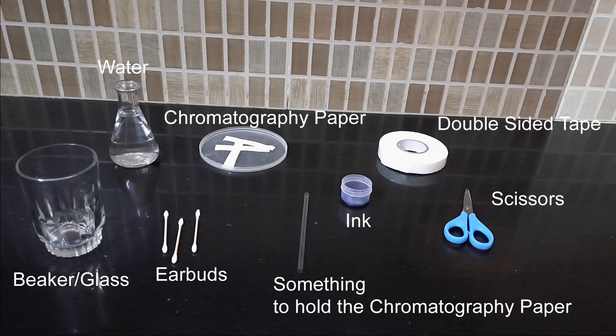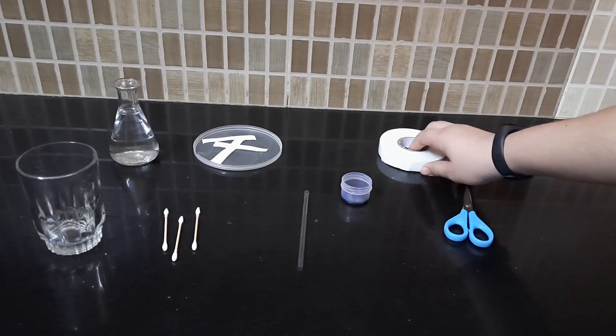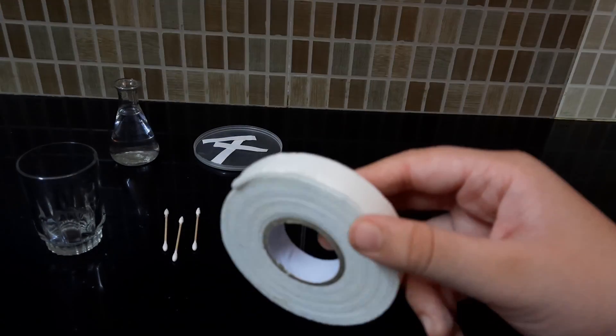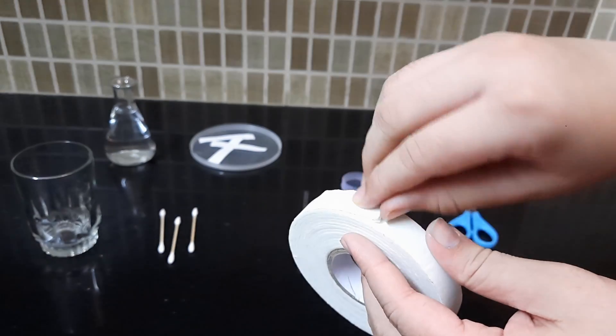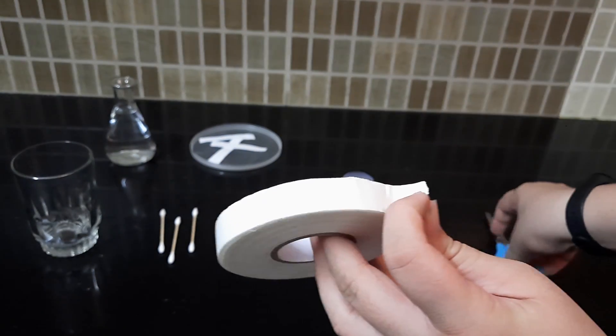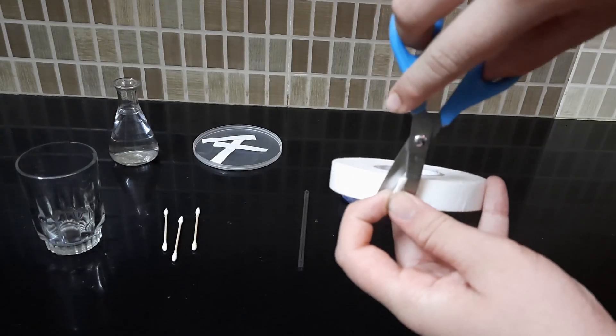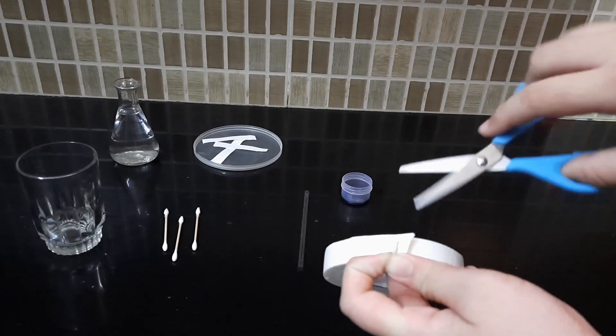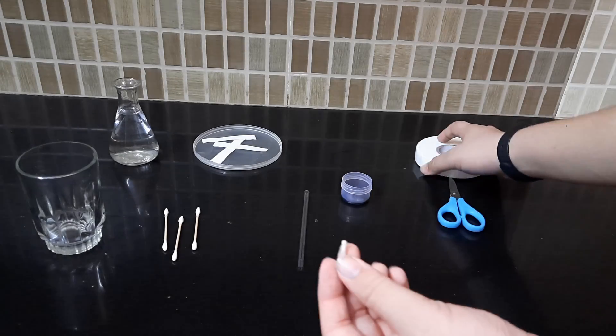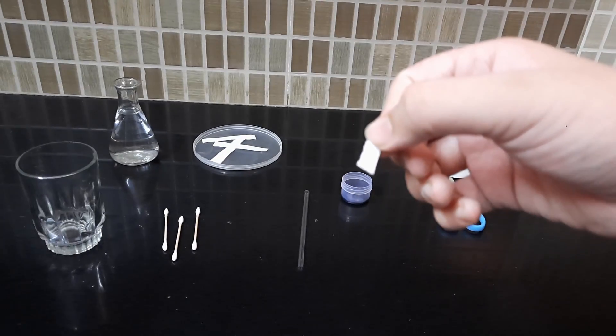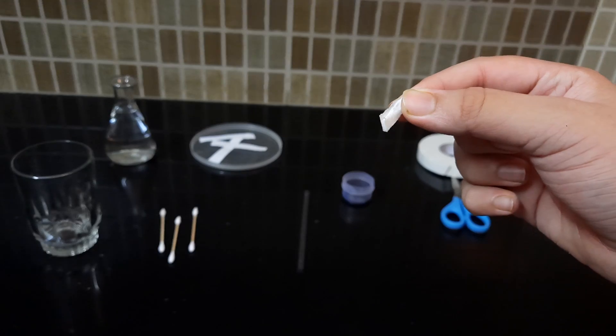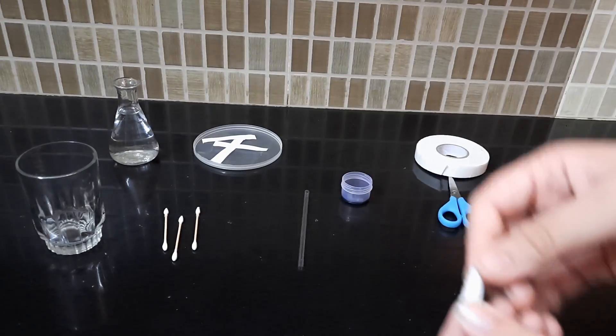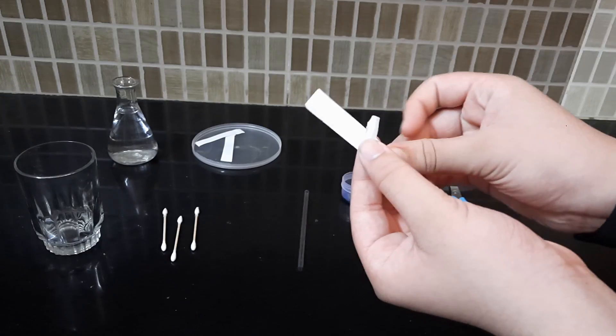Procedure: Cut a small piece of the double-sided tape. Now stick it on the chromatography paper.